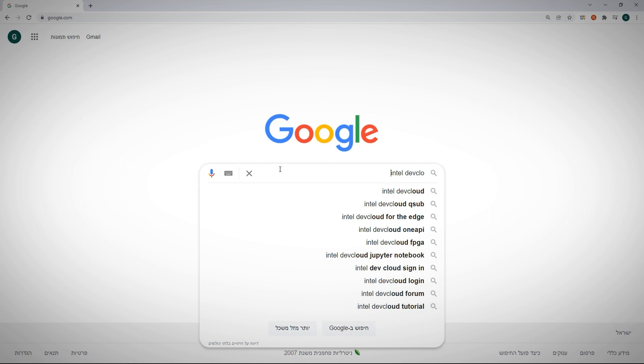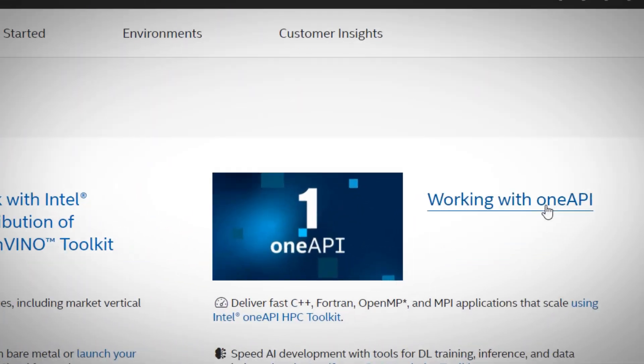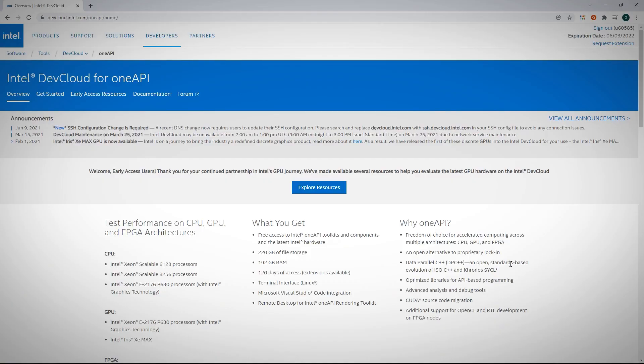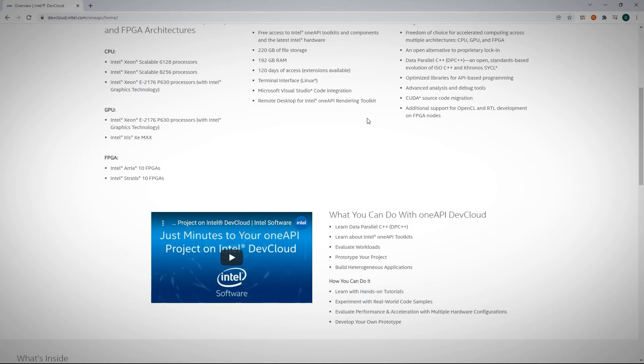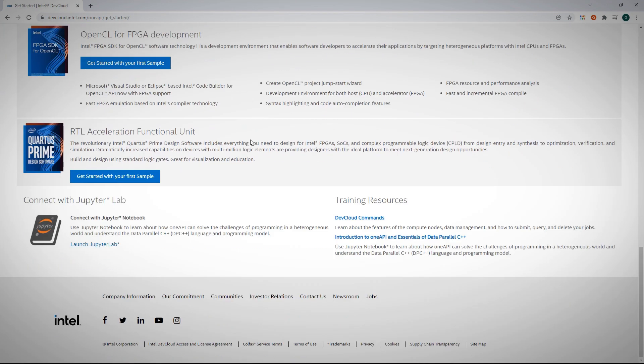Let's google Intel dev cloud, and enroll, it takes minutes, I will log in. We're working with OneAPI, we can get multiple CPU options, GPUs, FPGAs and more. Get started, launch the Jupyter lab.